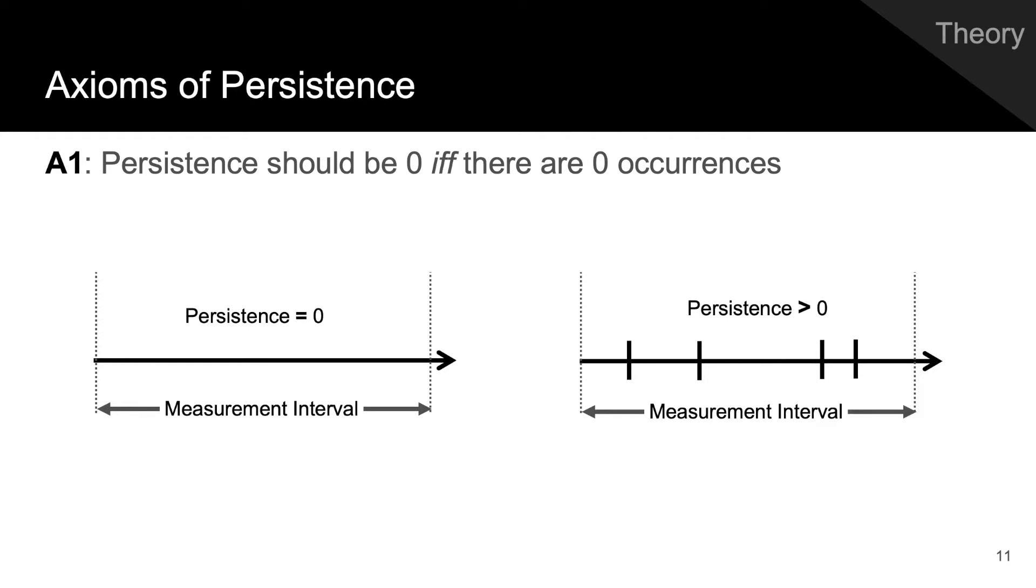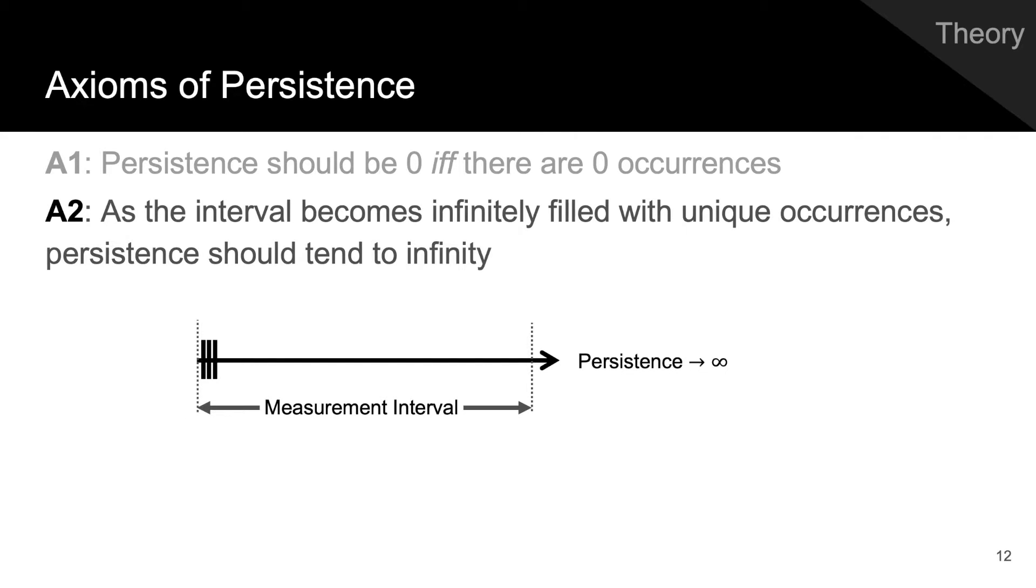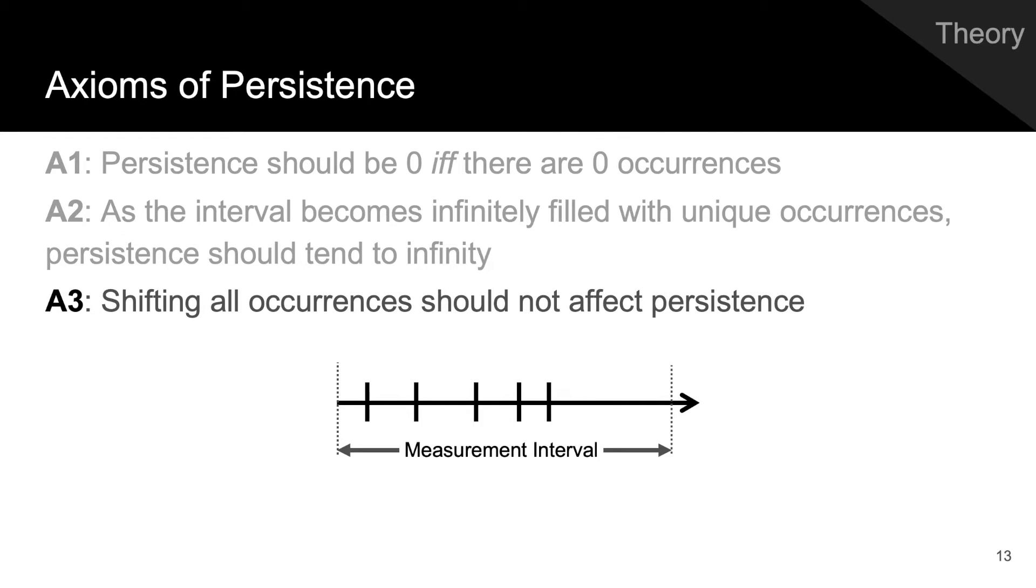The first axiom of persistence states that persistence should be zero if and only if there are zero occurrences. Second, as the interval becomes infinitely filled with unique occurrences, persistence should tend to infinity. Third, shifting all occurrences should not affect persistence.